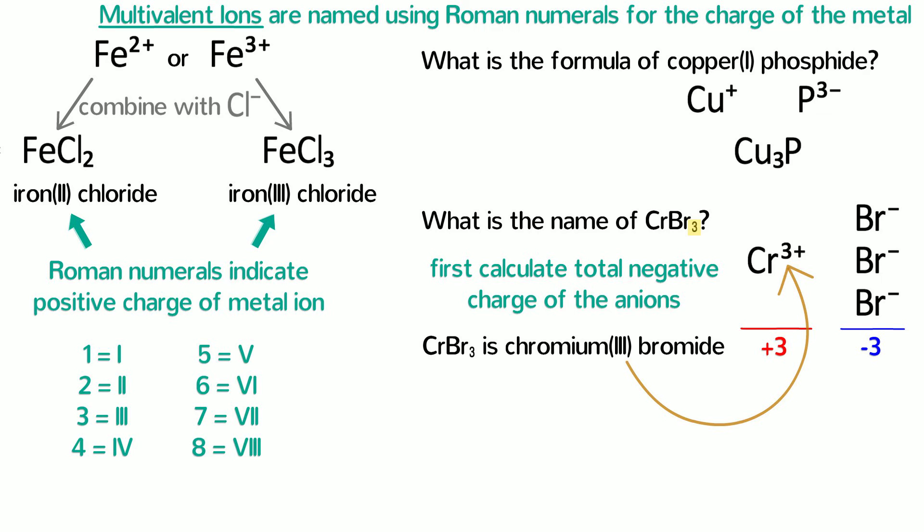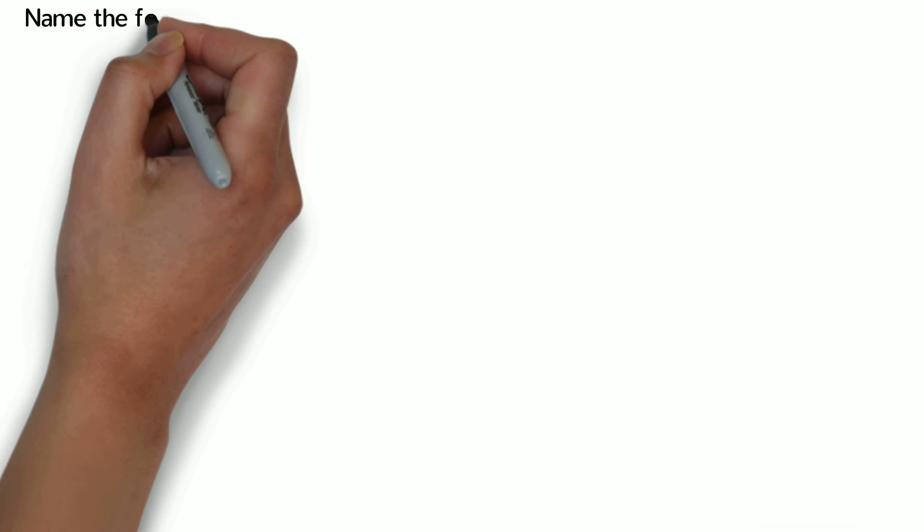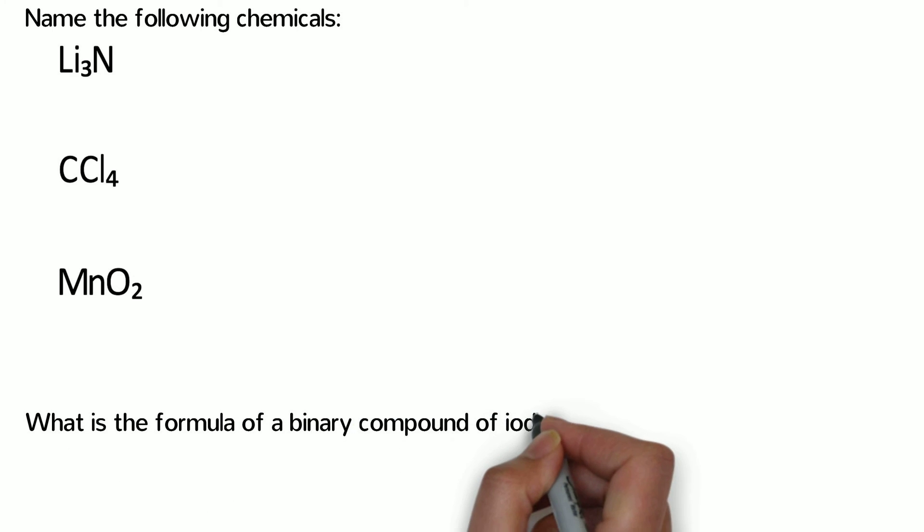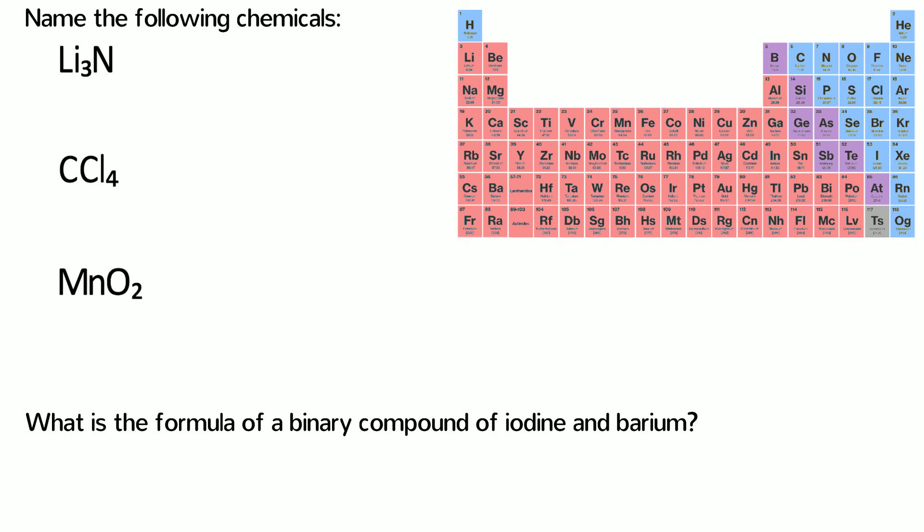Now anytime you learn something new, you really need to practice it to make it your own, so I'm going to give you 3 chemicals and I want you to try to name them. I also want you to determine the formula of a binary compound of iodine and barium. I'll even give you the periodic table to help you out. Please pause the video now and solve these problems using everything you learned in this video.